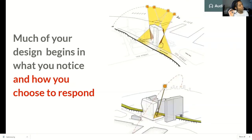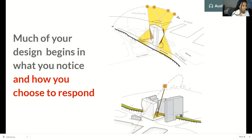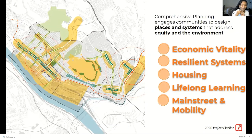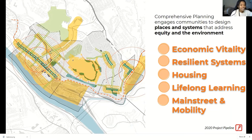This is important because when you are designing, you design to the things that you notice and respond to them. Much of the design process begins in what you notice and how you choose to respond. There's a type of plan called a comprehensive plan, which brings together all the analyses into a comprehensive design strategy that can address equity and environment as well — if you notice them, you can respond to them.